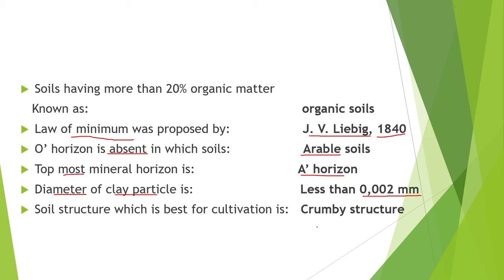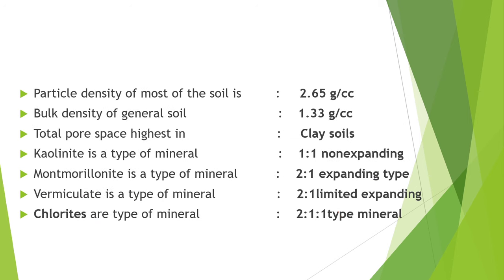Next point is, the soil structure which is best for cultivation is called crumby structure. Particle density of most soils is 2.65 gram per cc. The bulk density of general soil is 1.33 gram per cc. Always remember that particle density is greater than bulk density.